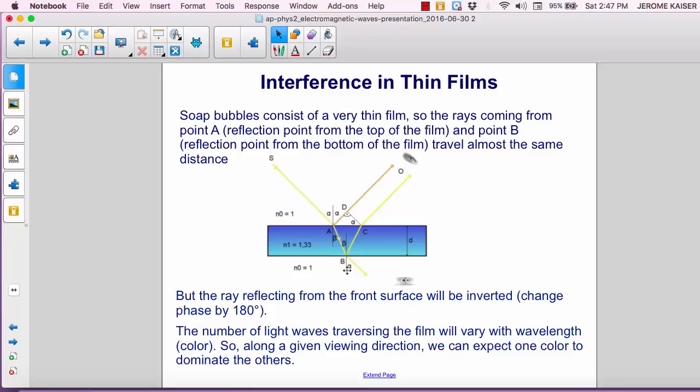The number of light waves traversing the film will vary with wavelength or color, and so along a different viewing direction, we can expect one color to dominate all the others.